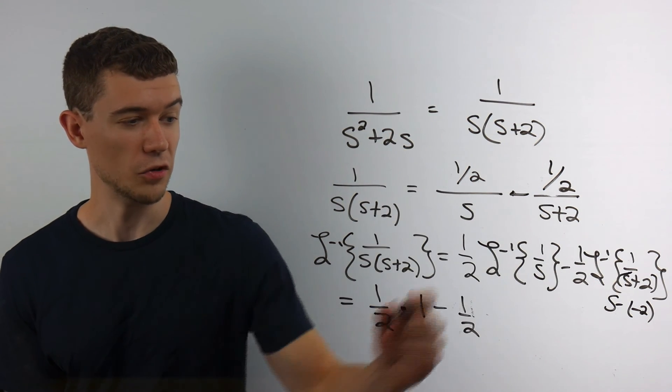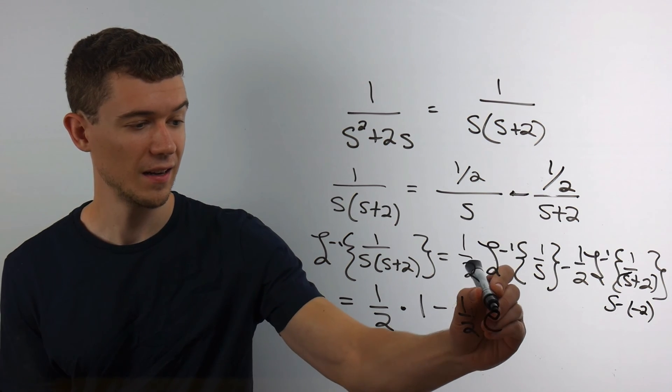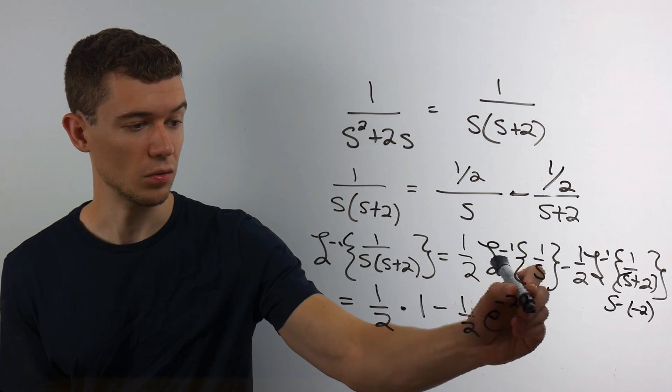Here, a being negative 2. So this is actually e to the negative 2t.